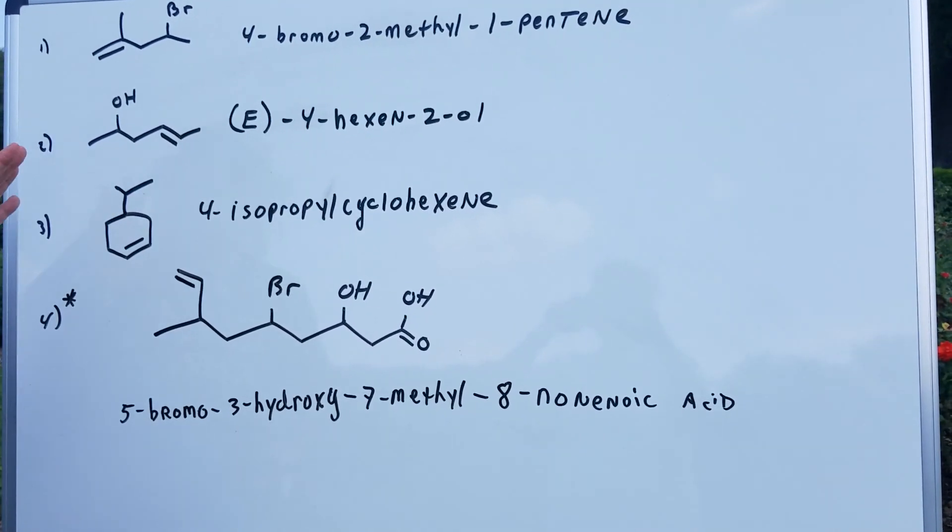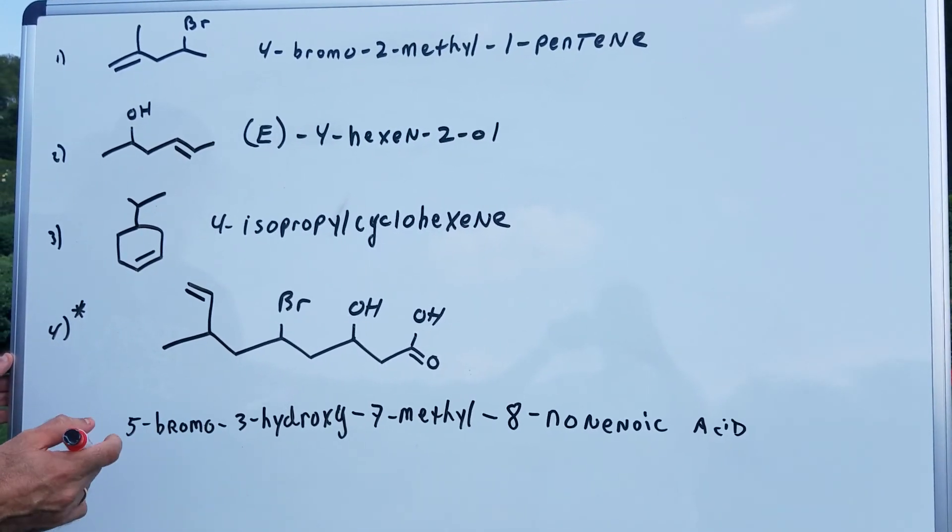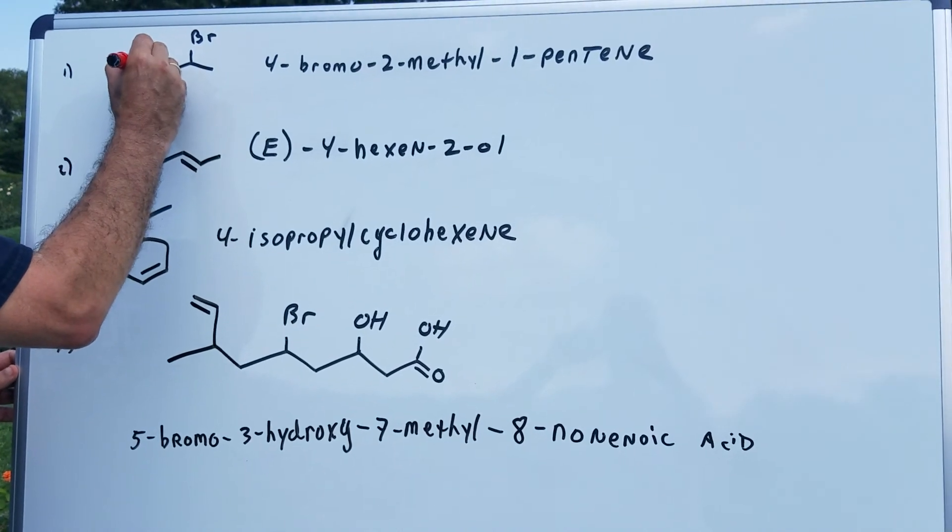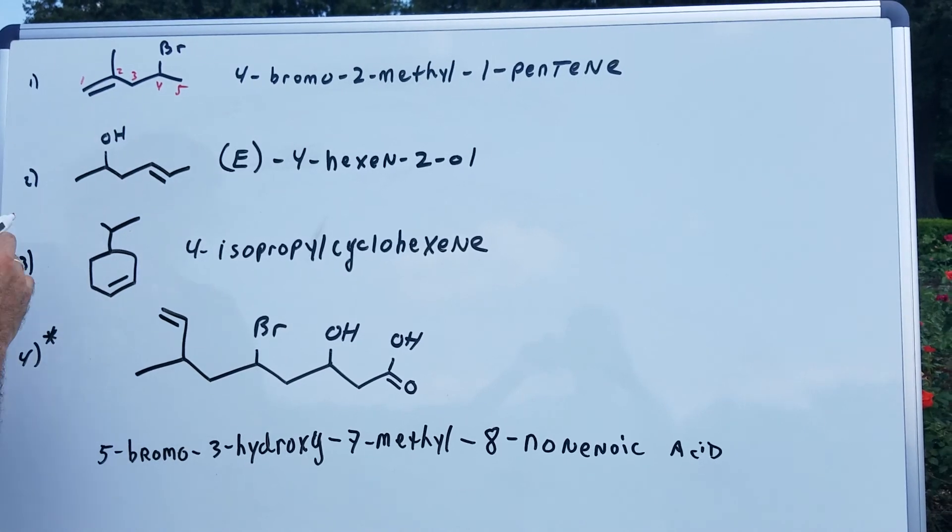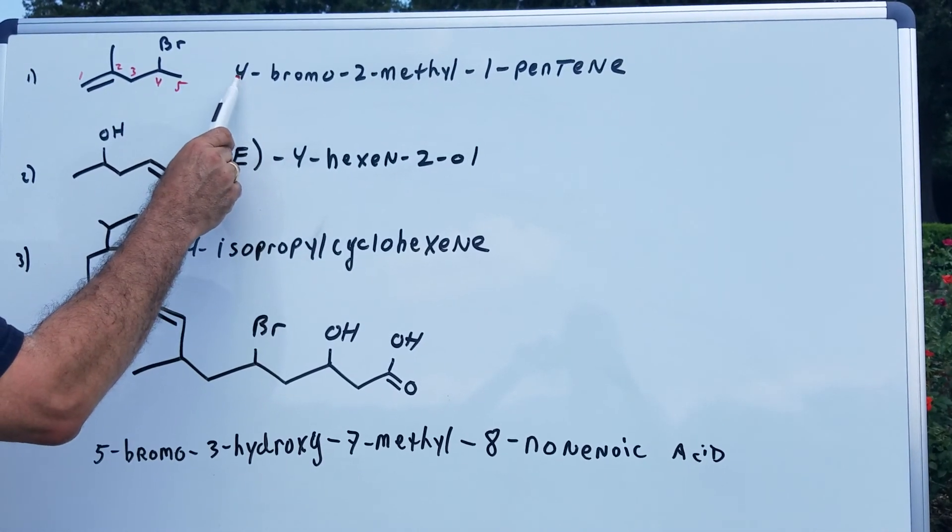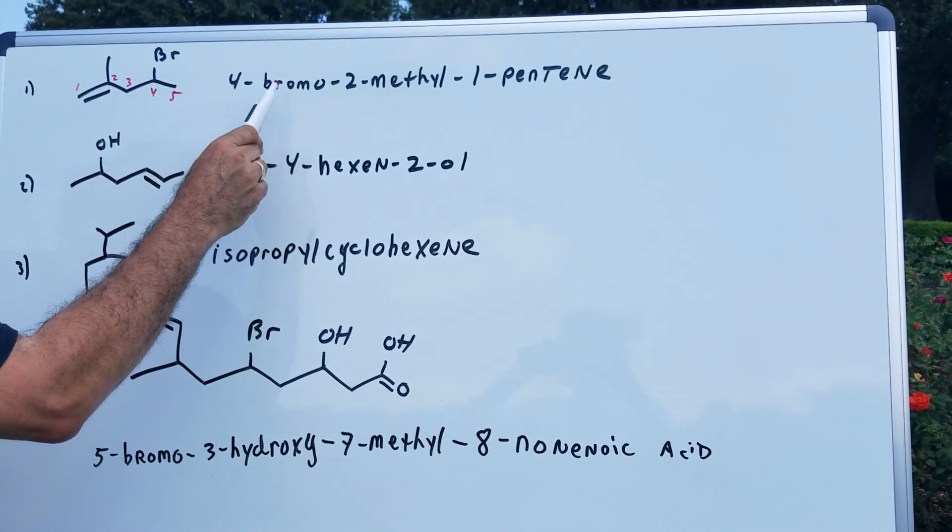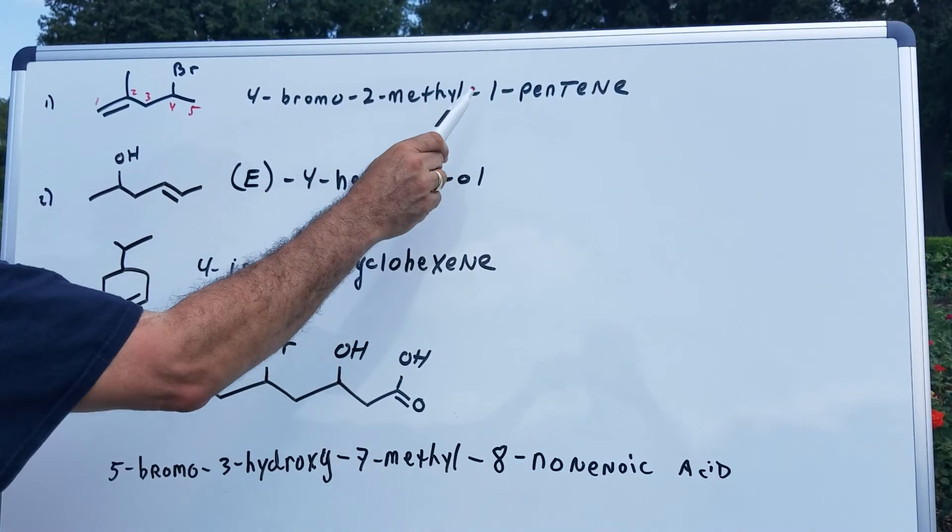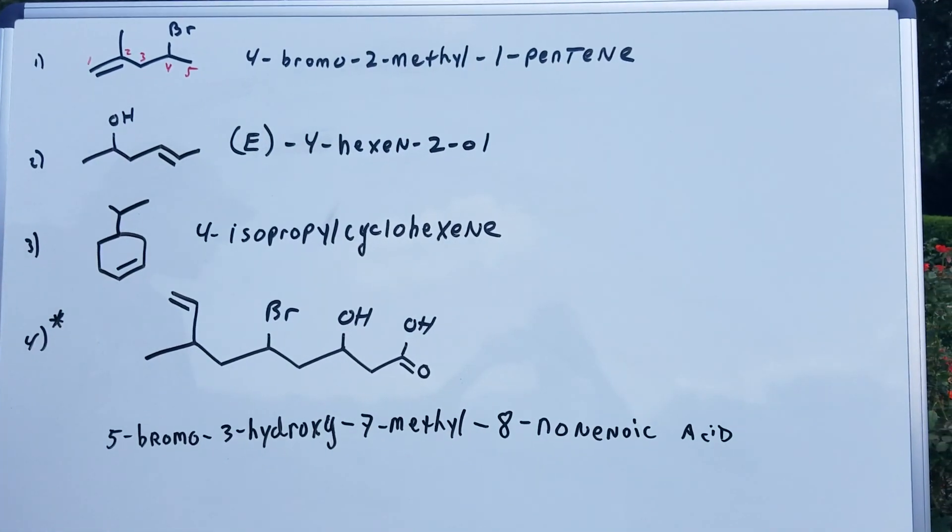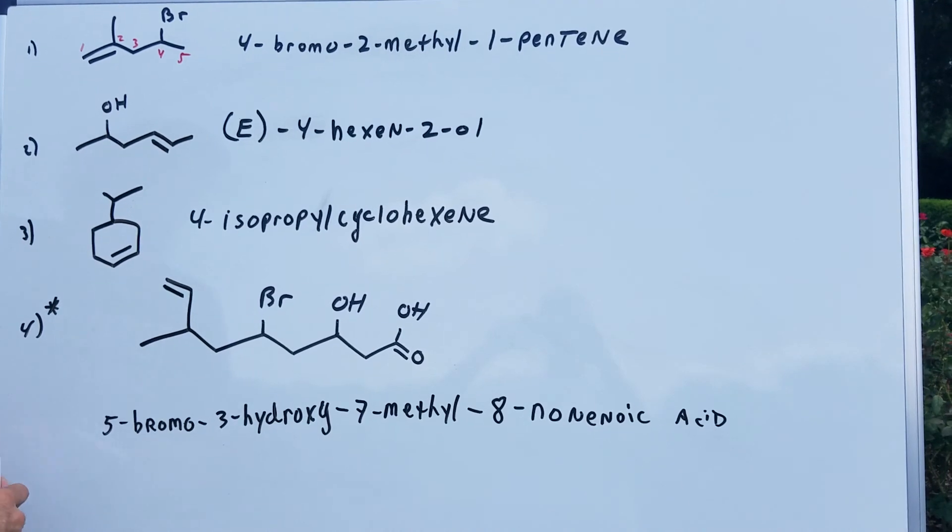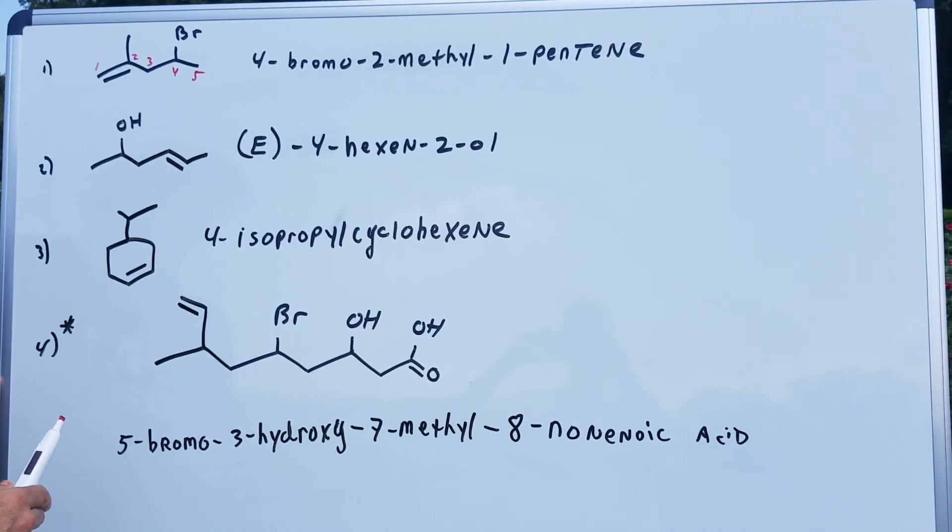There's four problems here. The first problem is a simple alkene, and what we're going to do is we're going to number the longest chain that contains the alkene group. So as you can see, I'm going to number the chain as follows. Now, off position number four is a bromine, so I'm going to call this four-bromo, and then off the number two carbon is a methyl. So it's four-bromo, two-methyl, one-pentene.